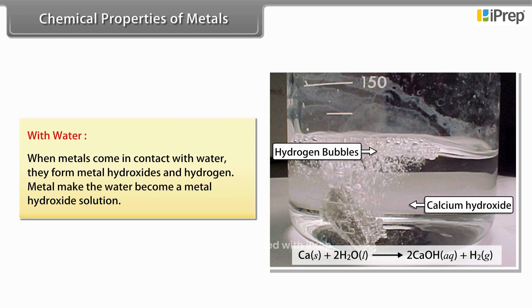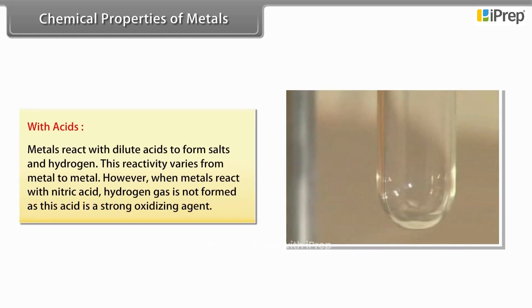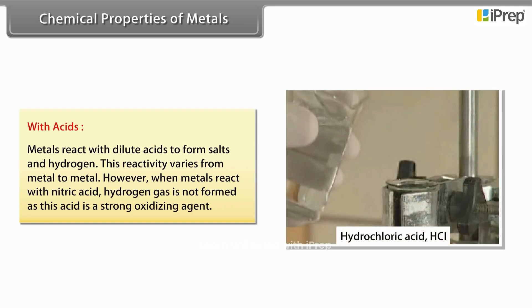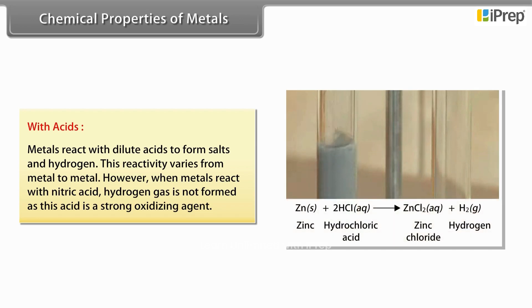With acids: Metals react with dilute acids to form salts and hydrogen. This reactivity varies from metal to metal. However, when metals react with nitric acid, hydrogen gas is not formed as this acid is a strong oxidizing agent.